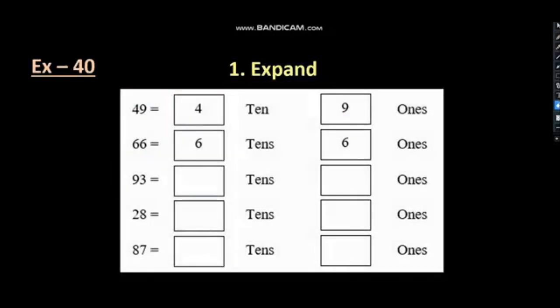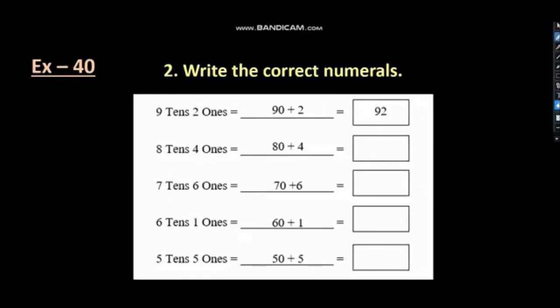Let's do number 2 from exercise 40. Here also we have write the correct numerals, right? Just like exercise 39. 9 tens 2 ones. It is tens, it is ones in a place value, right? So, if we place 9 tens here and 2 ones here, what will we get? We will get 92. Because 9 tens means 90 and 2 ones means 2.